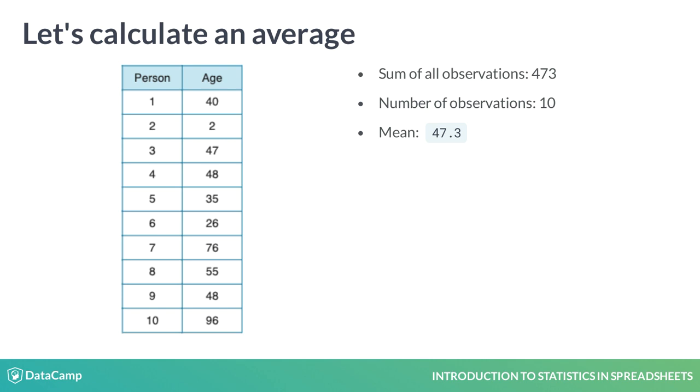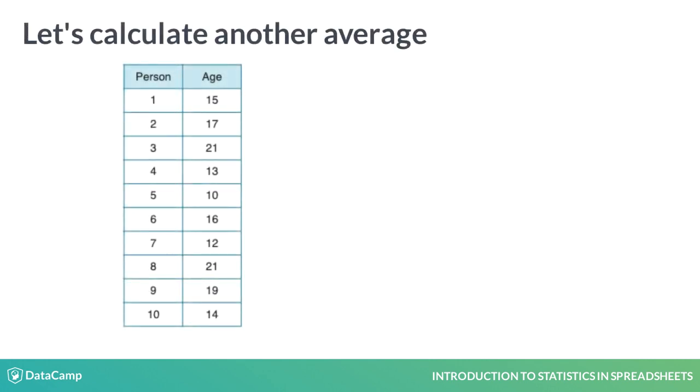Let's compare Japan's average age, 47.3, to Uganda's average age. The Ugandan sample sums to 158, and the count is 10. Thus, the Ugandan mean is 15.8.